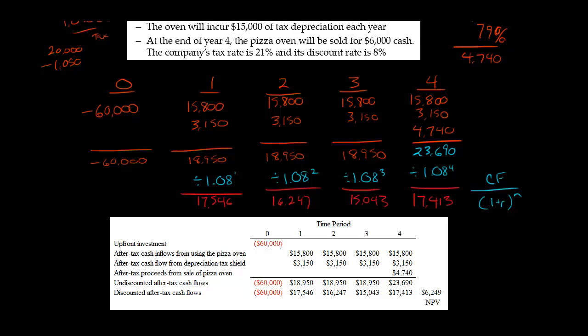If we take these numbers right here, these five numbers, and add them across, we get to $6,249. That is the net present value of this project. Because the project has a positive net present value, the NPV is greater than zero, assuming the company has the capital to do this project, they should accept the project.